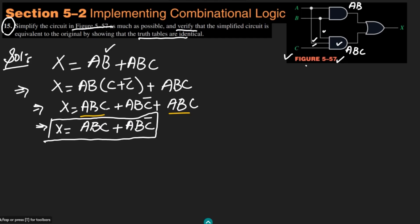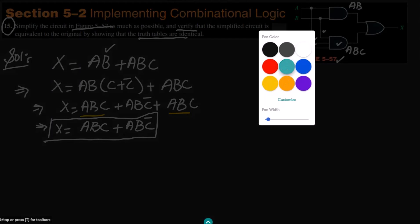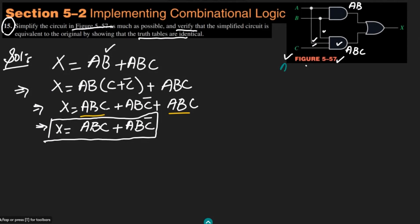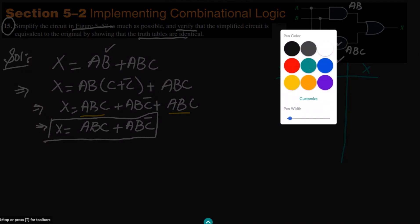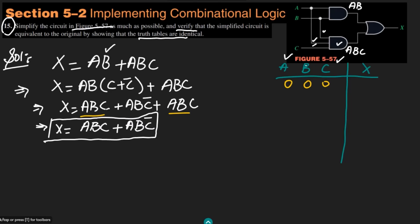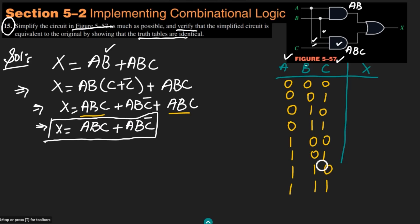This is the expression of the circuit given in figure 5.57 in standard form. Now let me write the truth table. We have three inputs A, B, C and the output X. The combinations are: 000, 001, 010, 011, 100, 101, 110, 111.